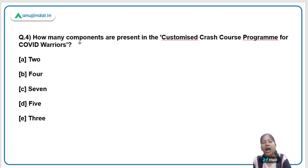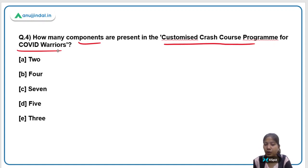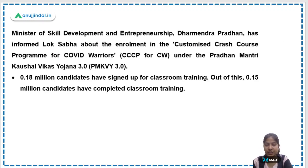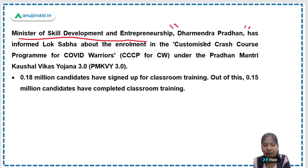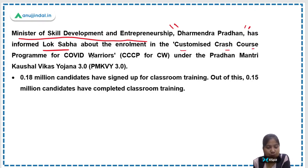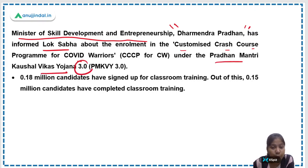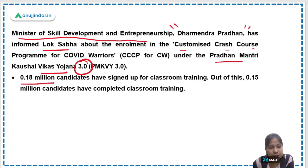The next question: How many components are present in the customized crash course program for COVID warriors? The right answer is two. Recently, the Ministry of Skill Development and Entrepreneurship informed the Lok Sabha that enrollment in this program — launched under Pradhan Mantri Kaushal Vikas Yojana 3.0 — has reached 0.18 million.